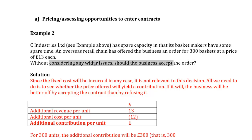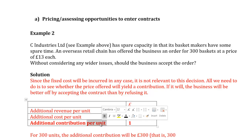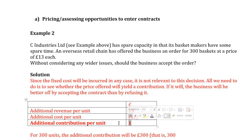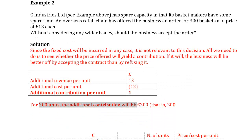Again, the magic word is contribution margin. If your contribution margin is positive, I would accept, because it will be used to cover more of your fixed cost and any remainder will be added to your profit. The additional revenue — the price offered per unit — is £13, and the variable cost will not change, still £12 per unit. So the additional contribution per unit is £1. Every unit sold to that new customer contributes £1 to profit, and 300 units at £13 will add £300 to your contribution margin.